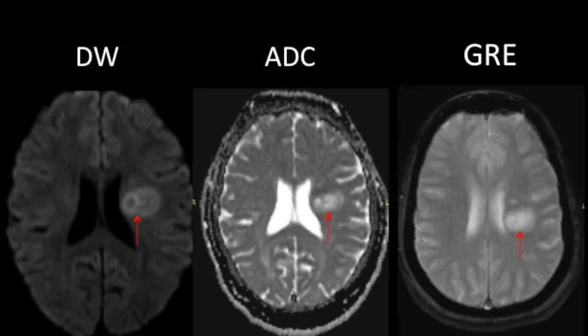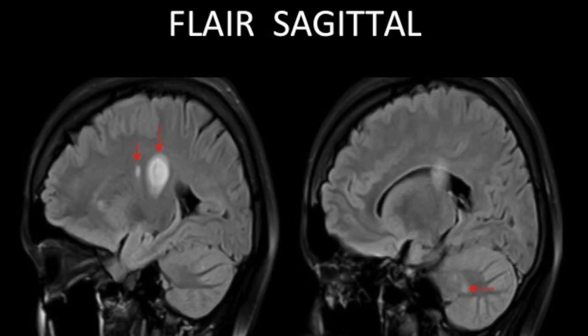On diffusion-weighted images, patchy areas of restricted diffusion were seen within it, predominantly within the outer ring, appearing bright on DW images and turning subtly dark on corresponding ADC maps. No blooming was seen on GRE images to suggest hemorrhage or calcification.